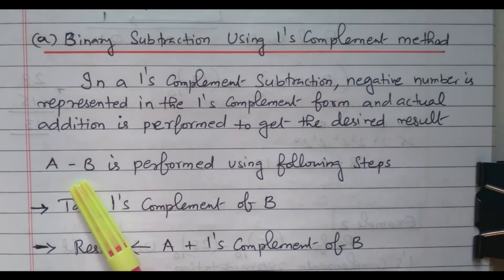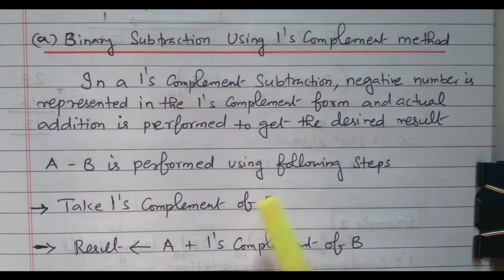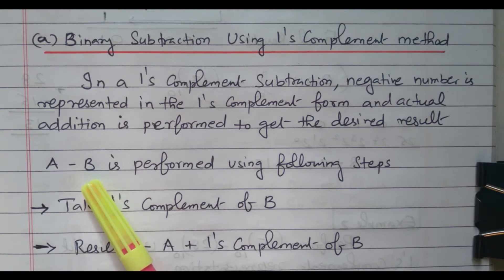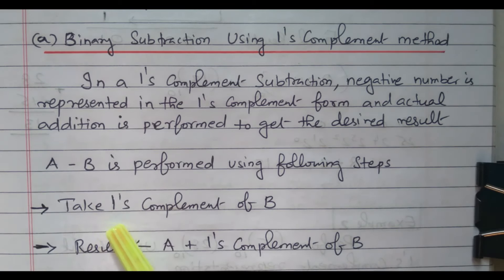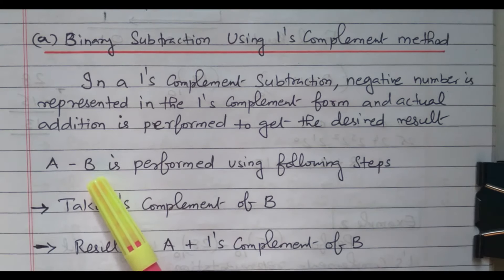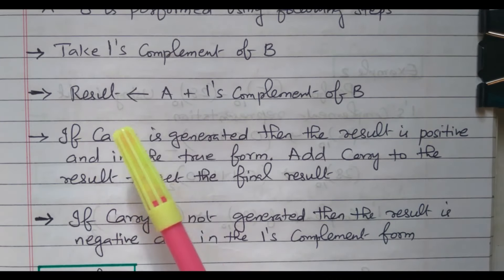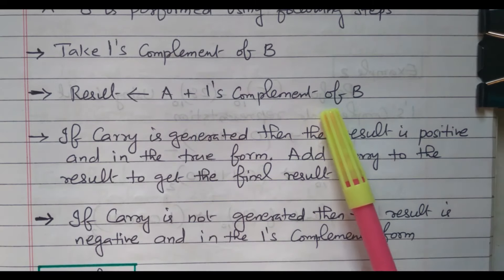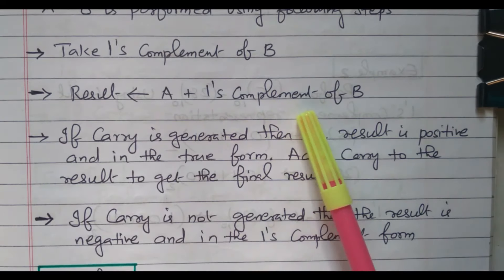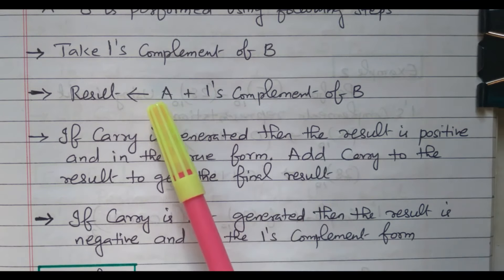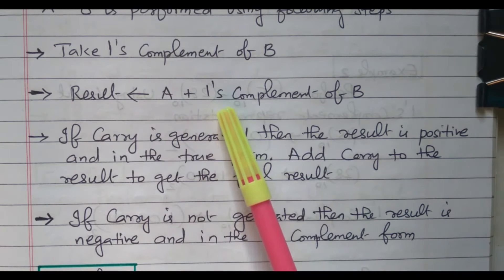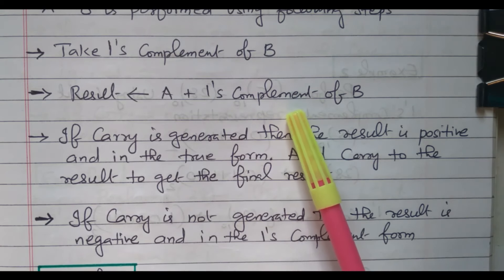Let us consider a minus b performed using the following steps. A is the first number, b is the second number. We need to subtract a minus b, so b is subtracted from a. The first step: take the one's complement of b — we need to take the one's complement of the second number. Then the next step: add the first number and the one's complement of the second number, that is a plus one's complement of b.